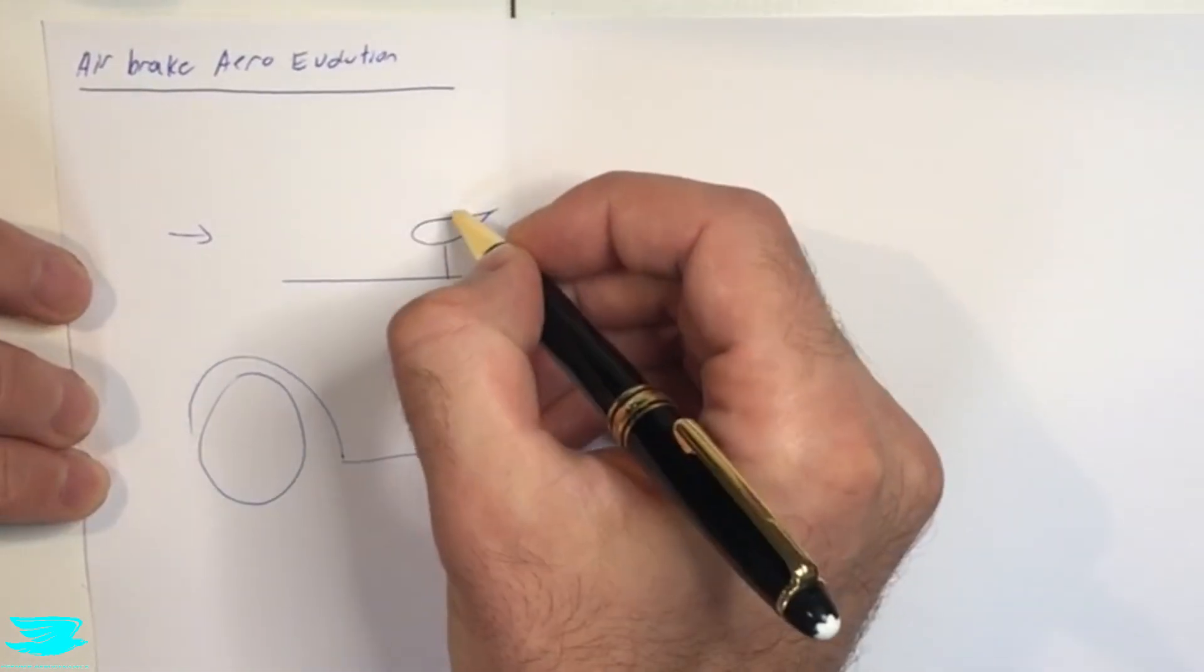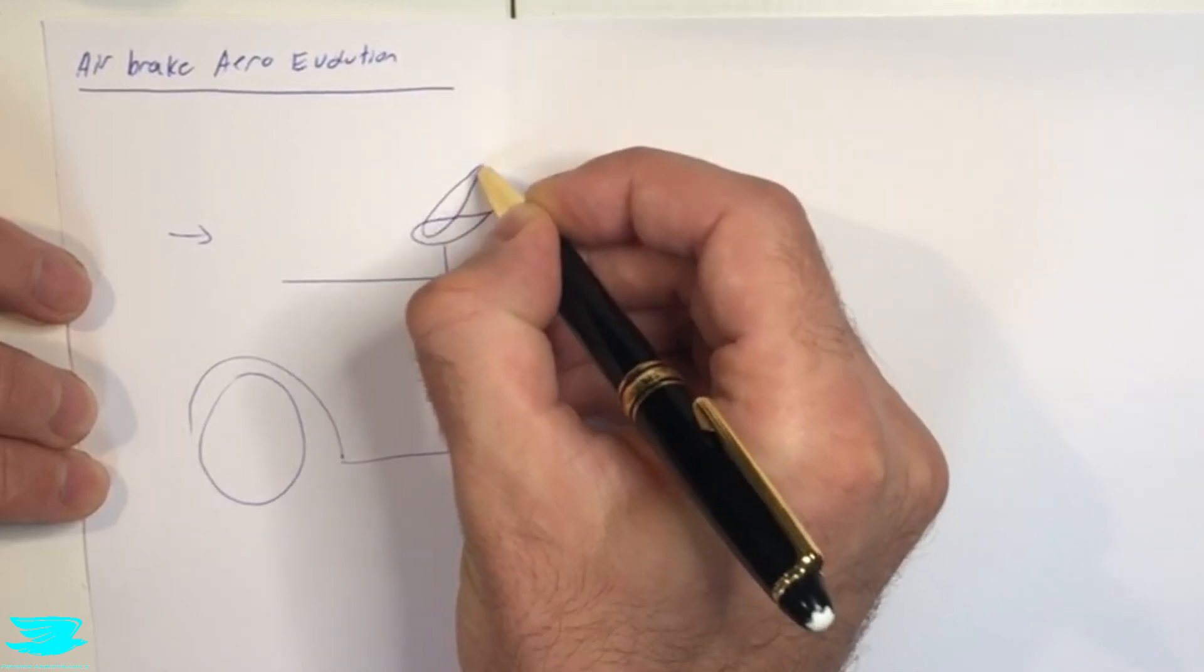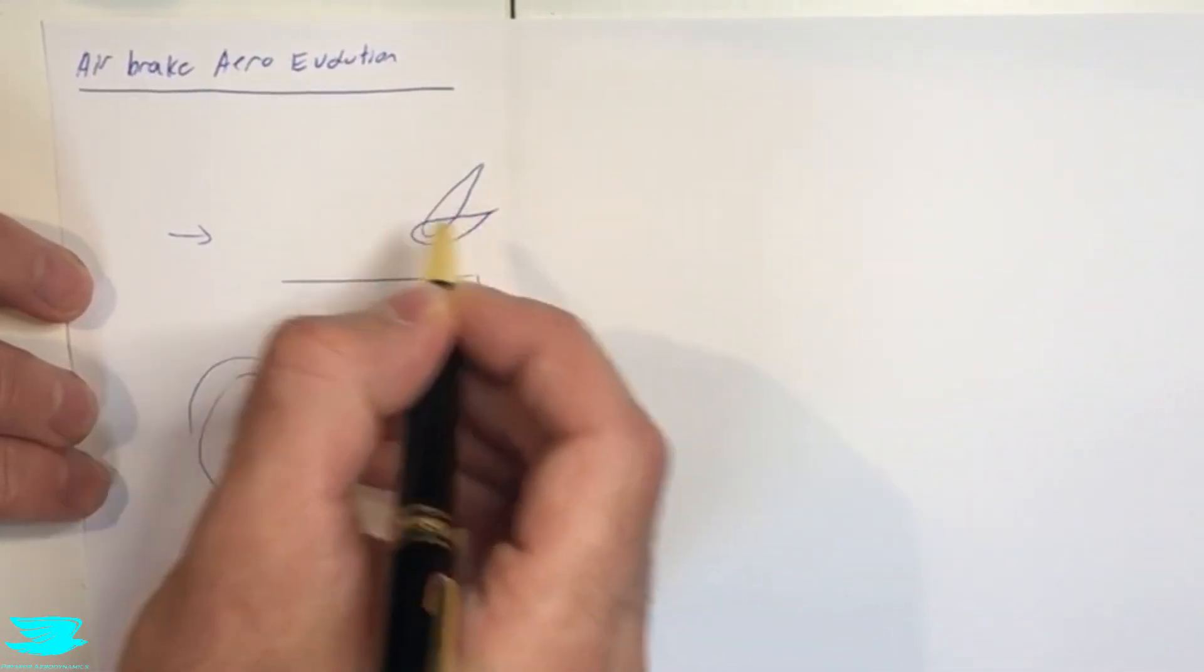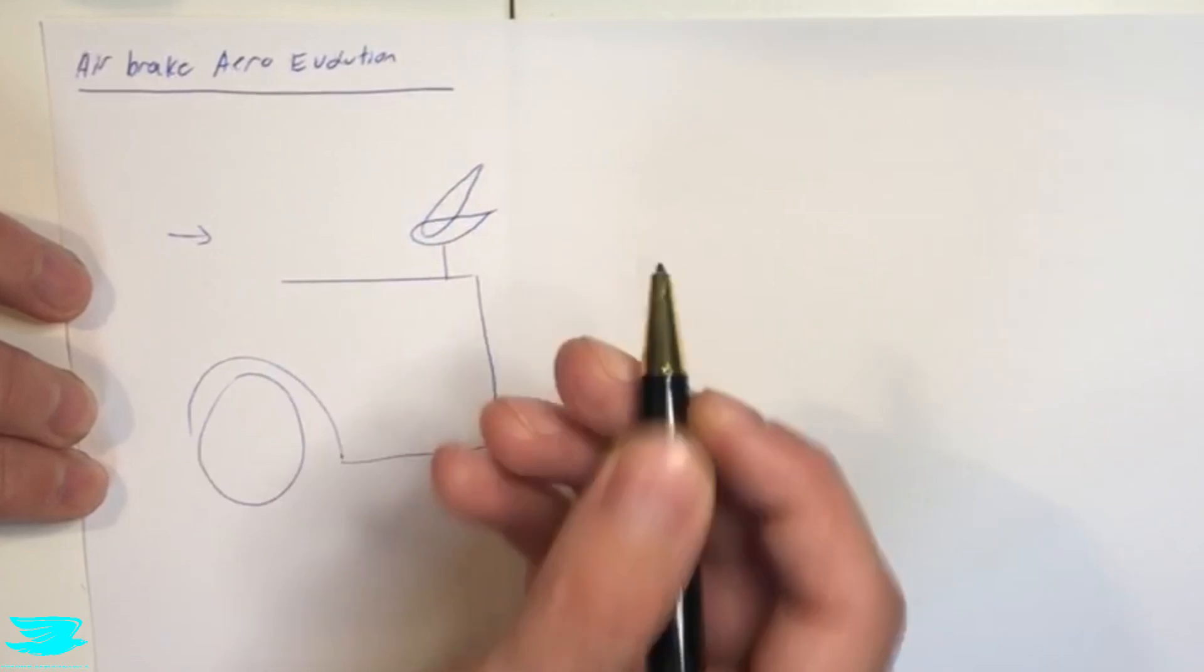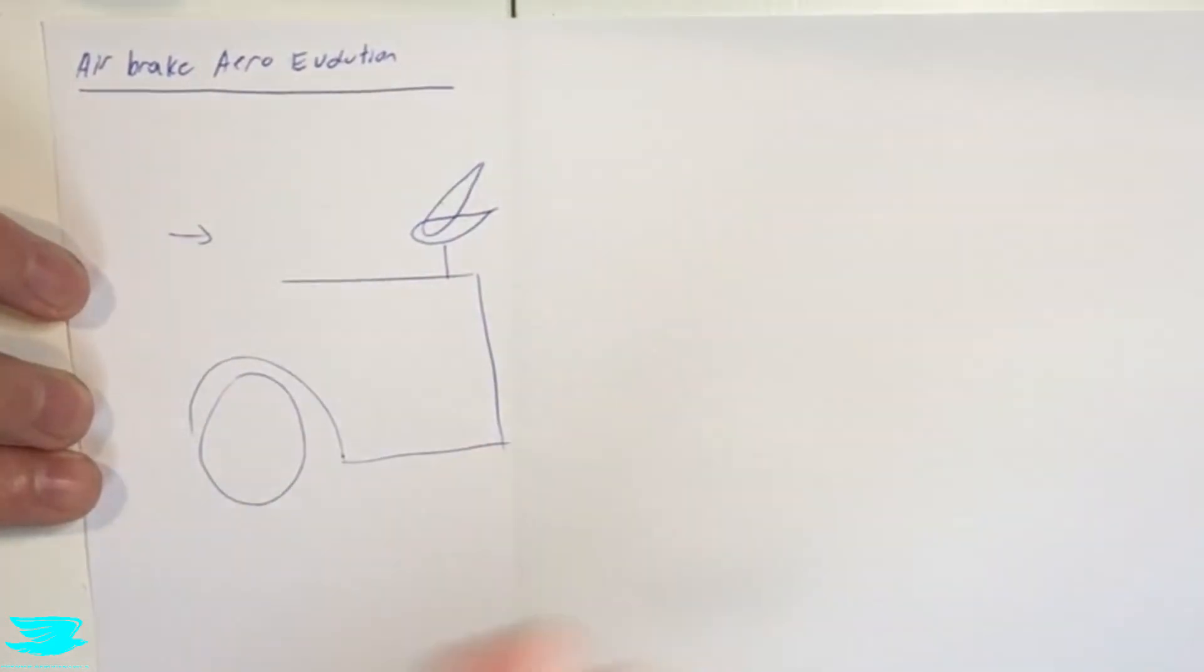So what the idea was is you push the airbrake up, so you rotate it. So now it's more in line with the flow and then the flow will hit it and produce more drag. So the higher you pitch an airfoil, the more drag will be produced.